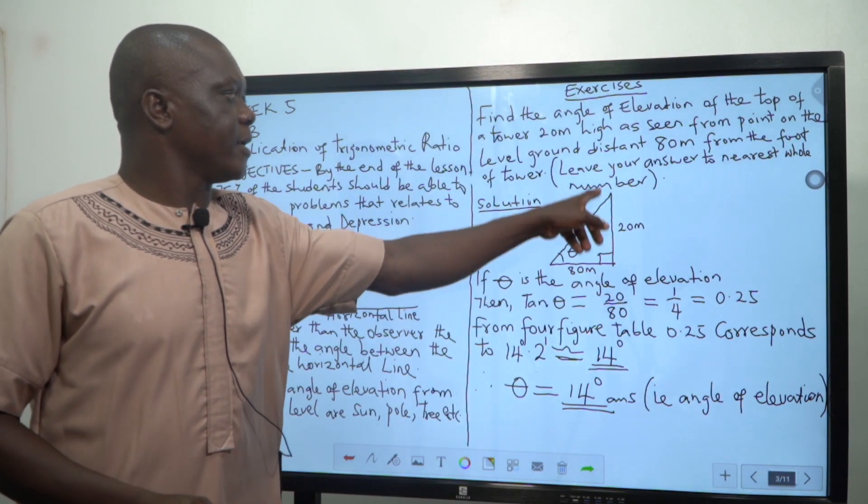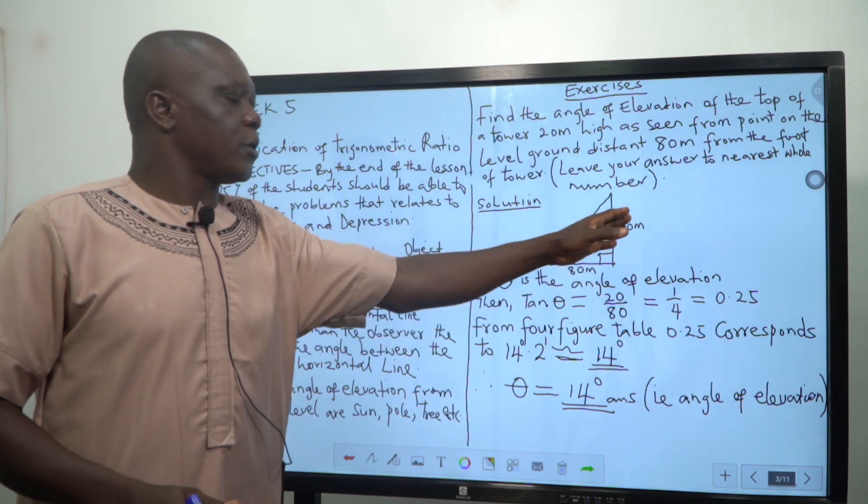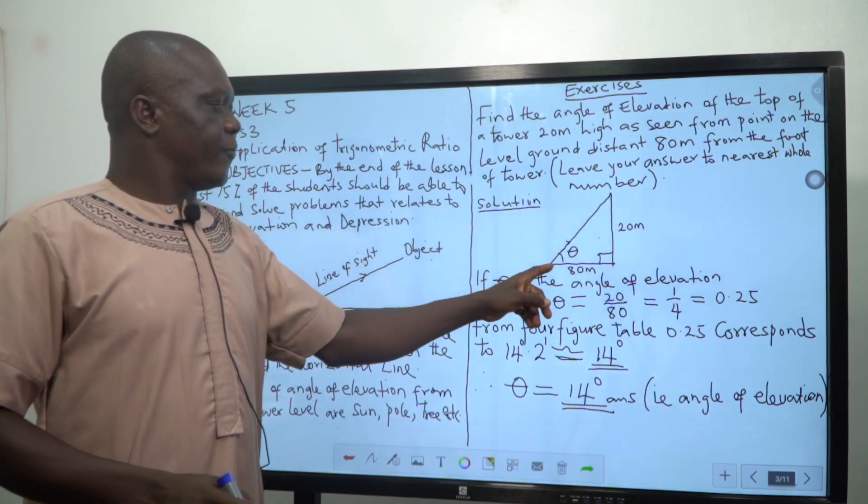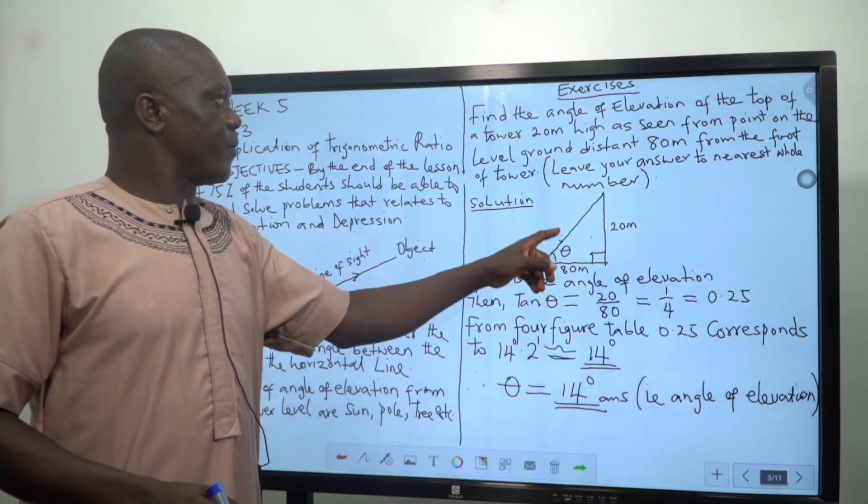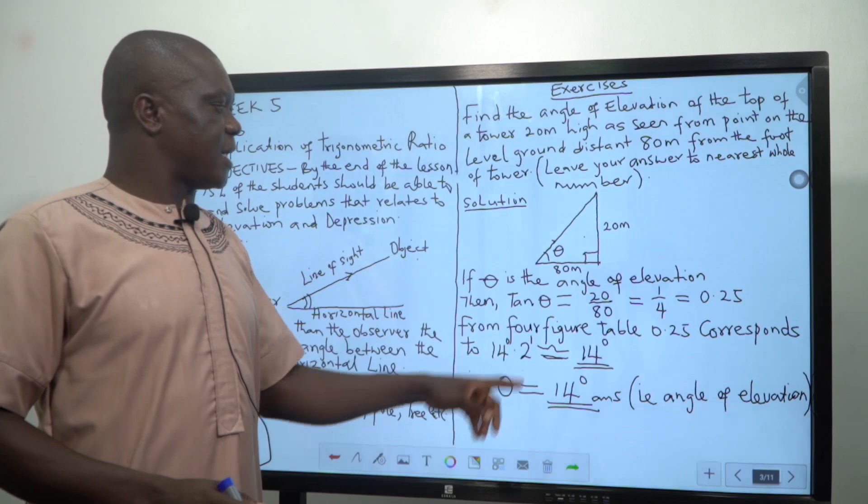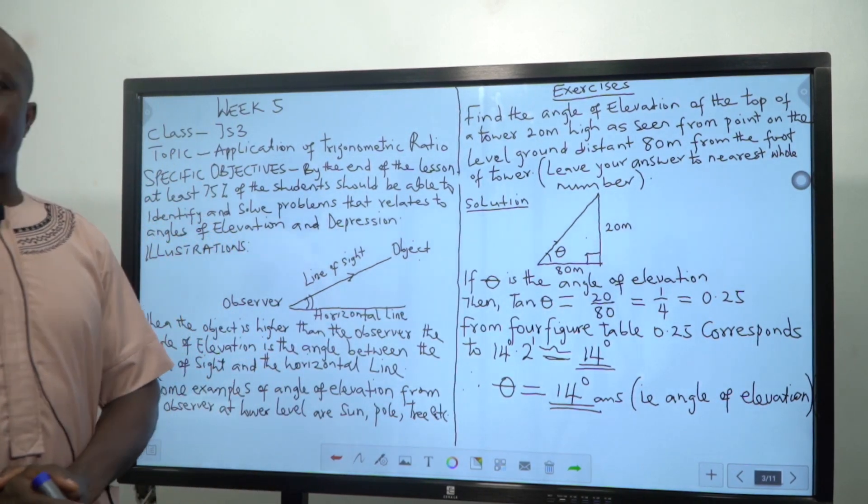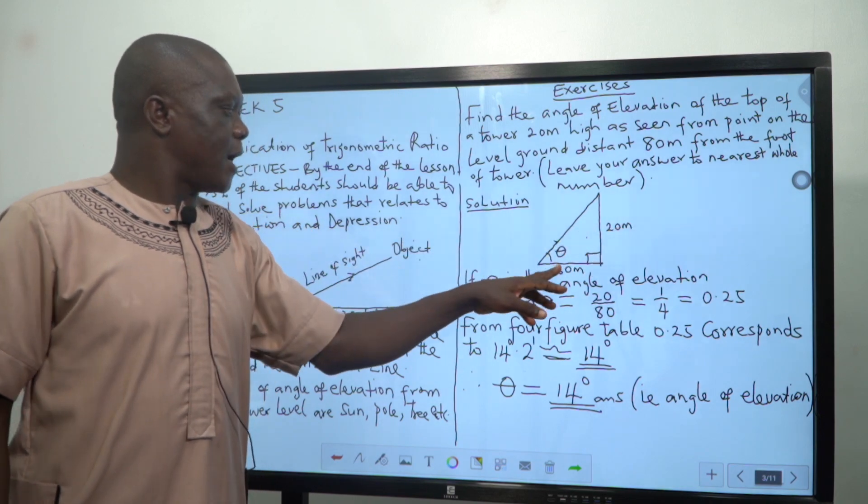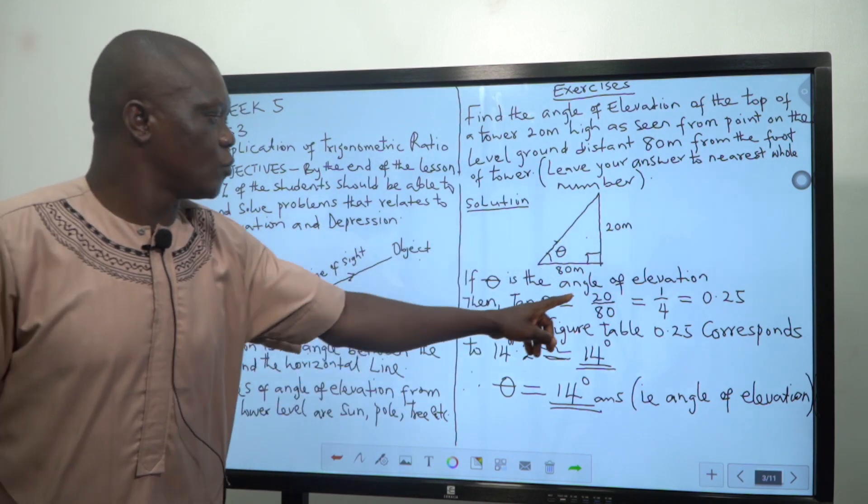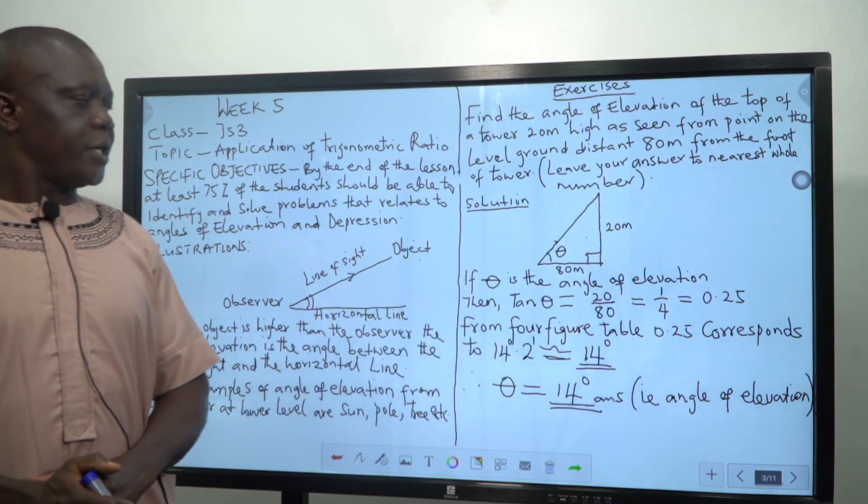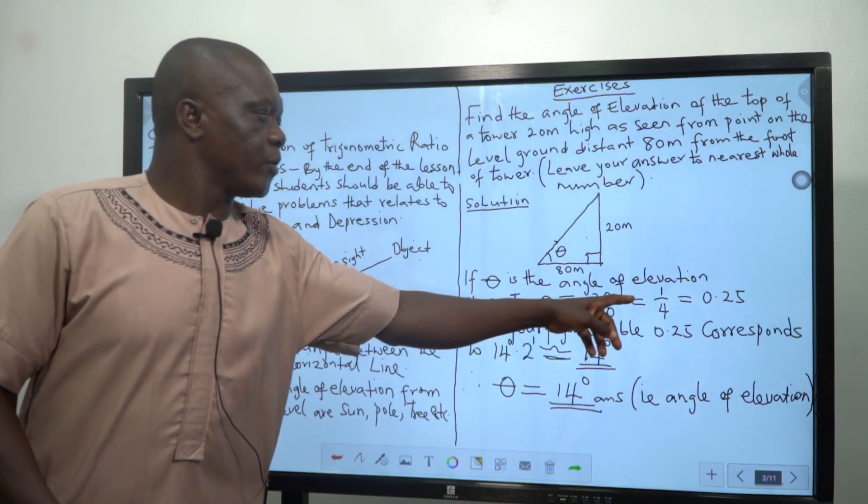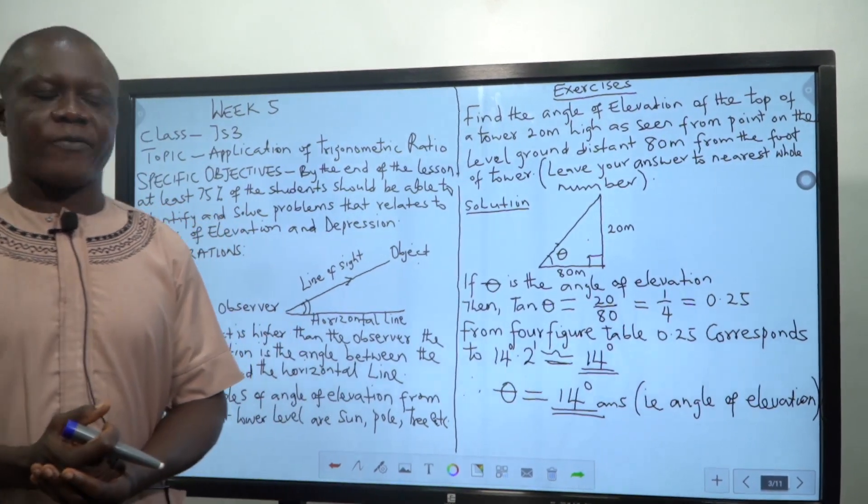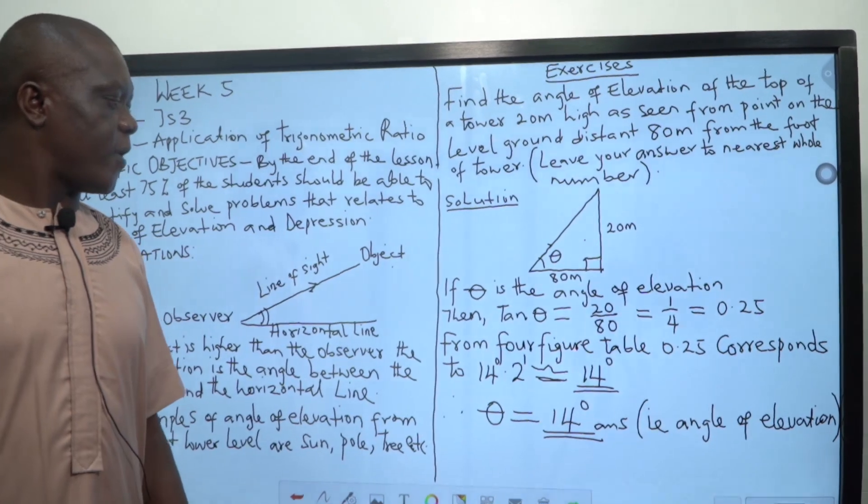Because here is theta now, this line, the tower, is now the opposite because it is the line facing directly to the theta. The foot is the level ground, the distance 80 meters. Then tan θ is opposite over adjacent. That's why I have 20 over 80, which if you divide will get to 1 over 4, which is equal to 0.25.